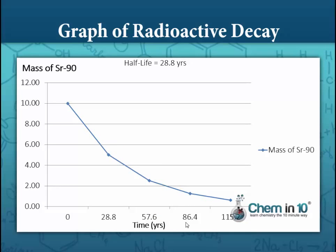In this graph, we have the remaining mass of strontium-90 plotted against time in years. The half-life of strontium-90 is the time it takes for half of the strontium-90 to decay. So if we start off with 10 grams of strontium-90, the half-life is when only 5 grams — half as much — remains. That time is 28.8 years. 28.8 years later, or 57.6 years from the beginning, only half of the 5 grams should remain, so we have 2.5 grams at 57.6 years.